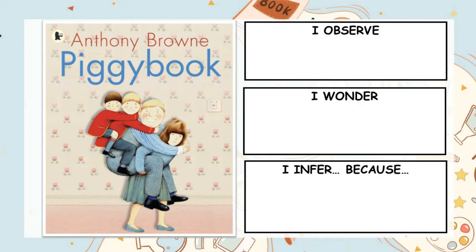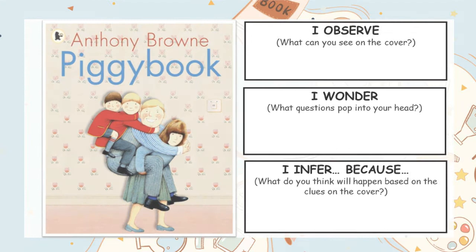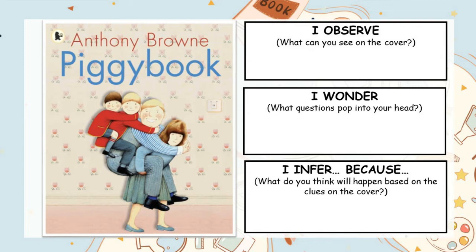O stands for what I observe — that's what you can see on the cover without using any 'I think' words. It's something we can all agree is definitely there. The W stands for 'I wonder' — what questions pop into your head about the story from looking at the cover? And the I stands for 'I infer' — what do you think is going to happen based on the clues on the cover? Take a few moments now to look at the cover closely. Pause the video and fill in the OWI chart now.